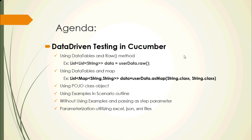First, I would like to explain what data-driven testing is. Data-driven testing, utilizing the framework, means the test scripts for the applications you are testing will automatically run multiple times, utilizing multiple inputs or validation values. You can provide those either from external files, or in Cucumber you can provide them in data tables, or you can pass them as a parameter.